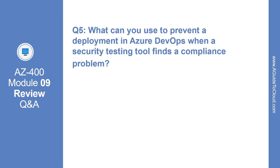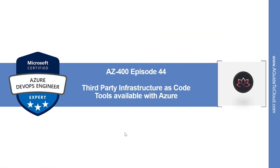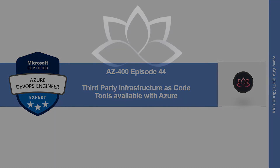The answer is release gate. That concludes this episode. In the next episode we're going to look into third-party infrastructure as code tools available with Azure. I will see you in the next one — until then, take care.